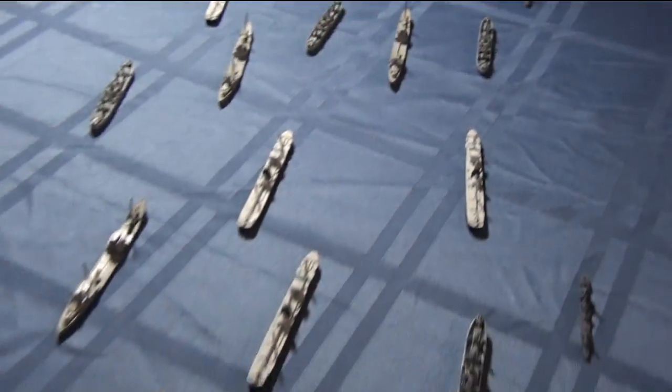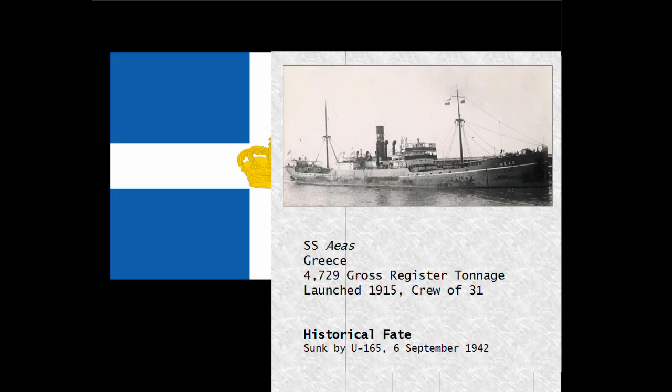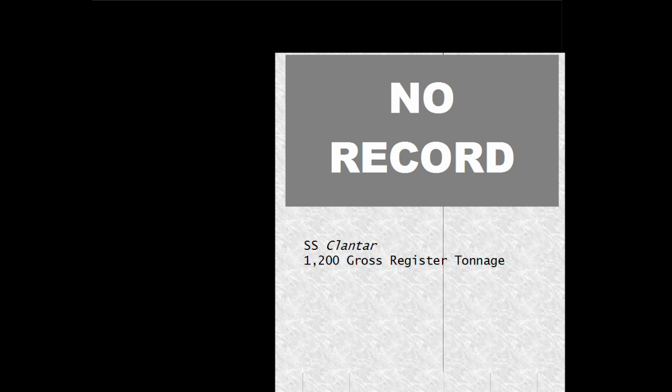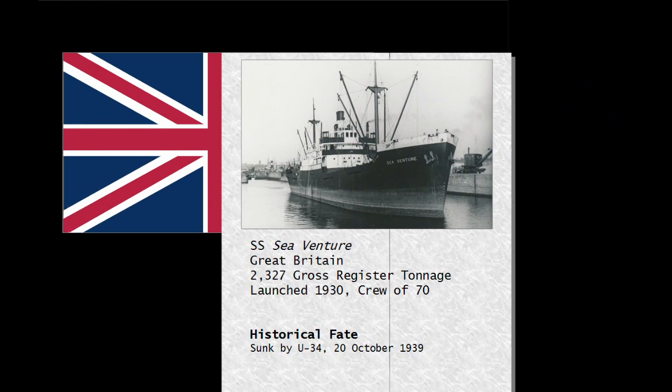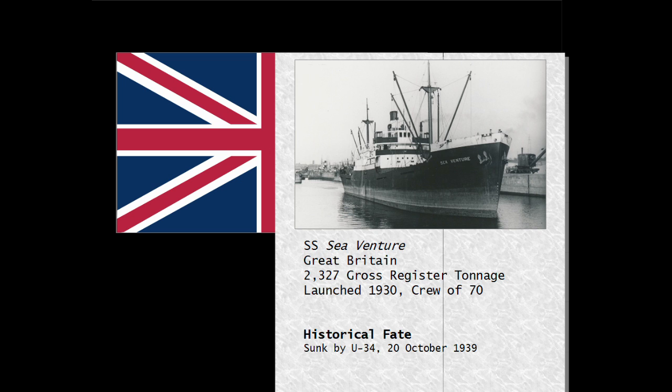Of all the ships in the convoy, there are four that offer the best prospects of a hit. Aeus, a Greek steamer of 4,700 tons. Clantar, a tiny 1,200 ton cargo ship. Santa Rita, an 8,400 ton vessel. And finally Sea Venture, 2,300 tons of British shipping.